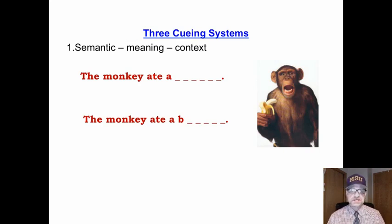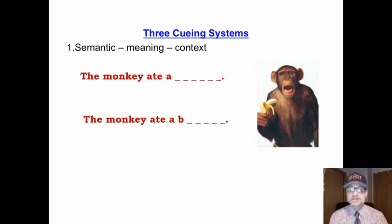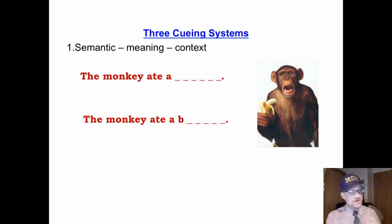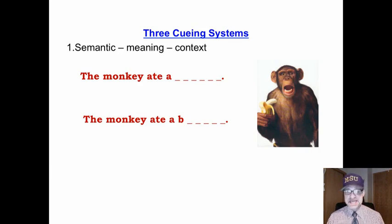The first of the three cueing systems: semantics. 'The monkey ate a…' — we use meaning, or the context of the sentence, or the knowledge stored in our head to fill that in. We can say with absolute certainty that the monkey ate a banana.